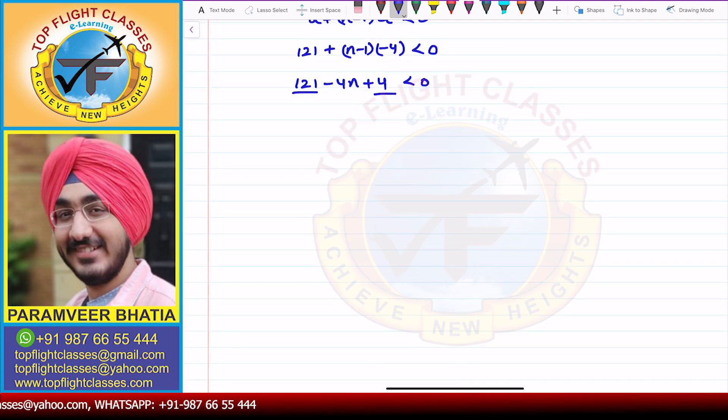So from here, I will get 121 minus 4N plus 4 is less than 0. Now 121 plus 4, so that is equal to 125, is less than 4N. So here, N value comes out to be greater than 125 by 4. Now if we divide it...